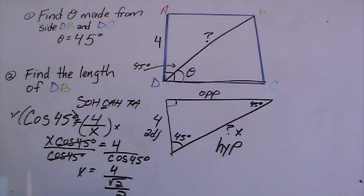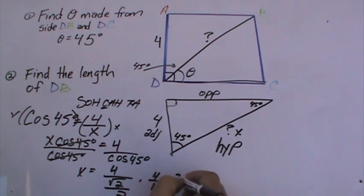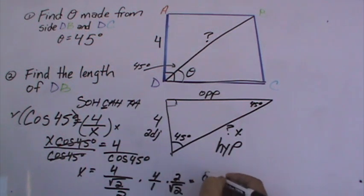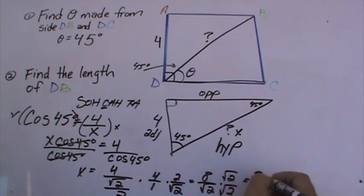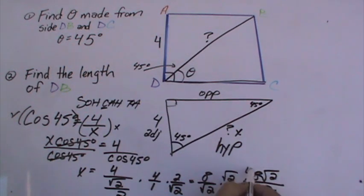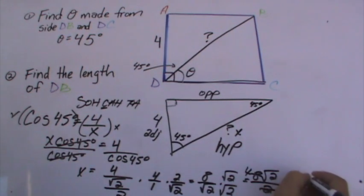From here on out, it's just simple algebra. If you have 4 over 1, and you multiply by the reciprocal, you get 8 over square root of 2. You don't want to leave the square root at the bottom, so you multiply both top and bottom by square root of 2. That leaves you with 8 square root of 2 over 2. 2 goes into 8 four times. So your final answer would be 4 square root of 2.